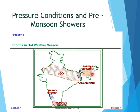Next, mango showers: these are pre-monsoon showers along the Kerala coast, important for mango and tea cultivation. They are also known as cherry blossoms, as they are beneficial for the cultivation of coffee and cherry.